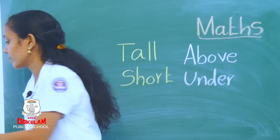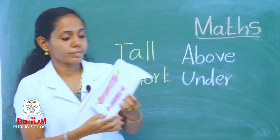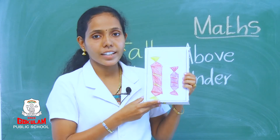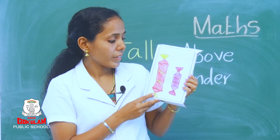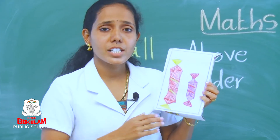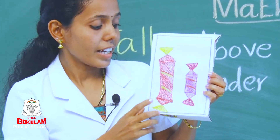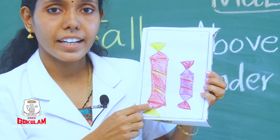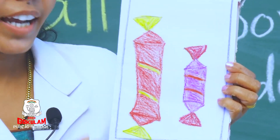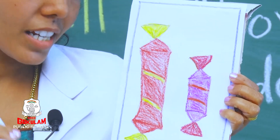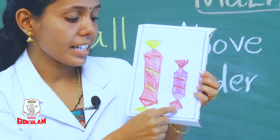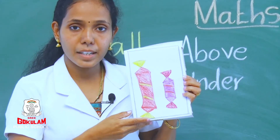See the next picture. Children, do you like chocolate? Yes, these are two chocolates. Which chocolate is tall? Yes, the red one. The red chocolate is tall and the violet chocolate is short. So we can say this is tall and this is short. Is it clear?